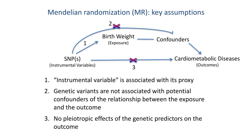Finally, the genetic proxy variable cannot be associated with the outcome other than through its effects on birth weight. That third assumption precludes any pleiotropic effects of the chosen variants. The authors tested this assumption using the now-standard method of Egger regression and did not see evidence that it was a big threat in this study. Additionally, the authors undertook a number of sensitivity analyses to maximize statistical power and maximize the chances of satisfying these assumptions.